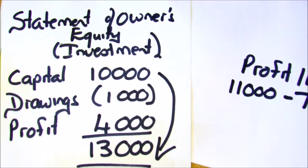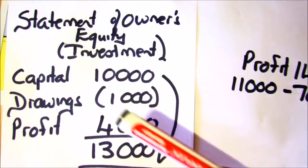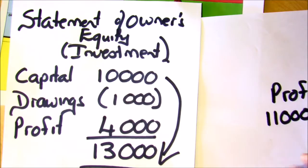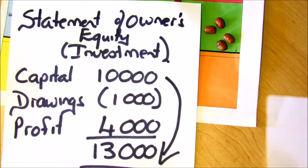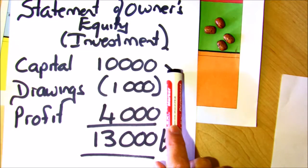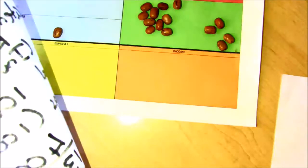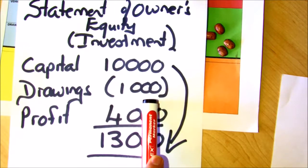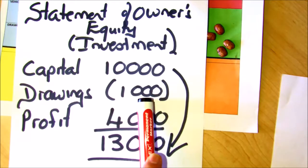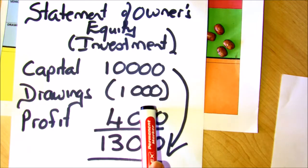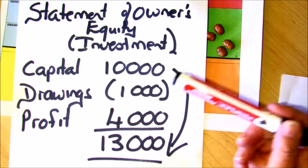Now we can summarize this by writing up what we call a statement of owner's equity or a statement of his investment. We started off with a capital of 10,000 - remember you can go back to the beans, he had the original 10. He took drawings out of 1,000. Now drawings will reduce his capital because he's taking money out of the business, just like you would take money out of a bank and you'd have less capital in the bank.